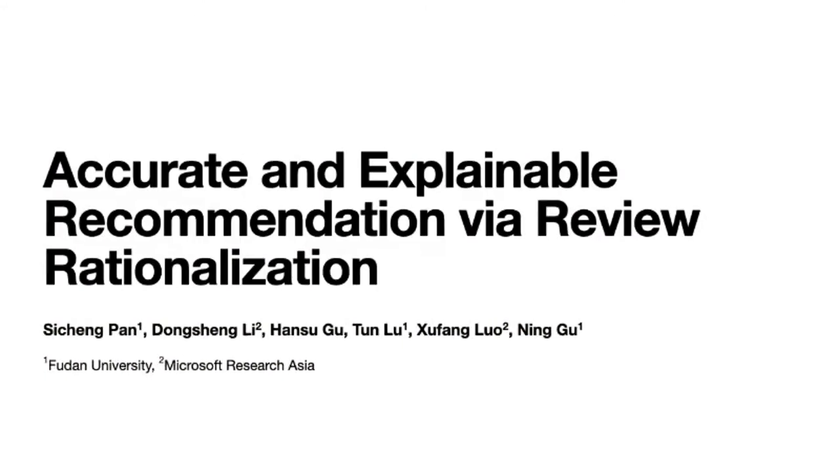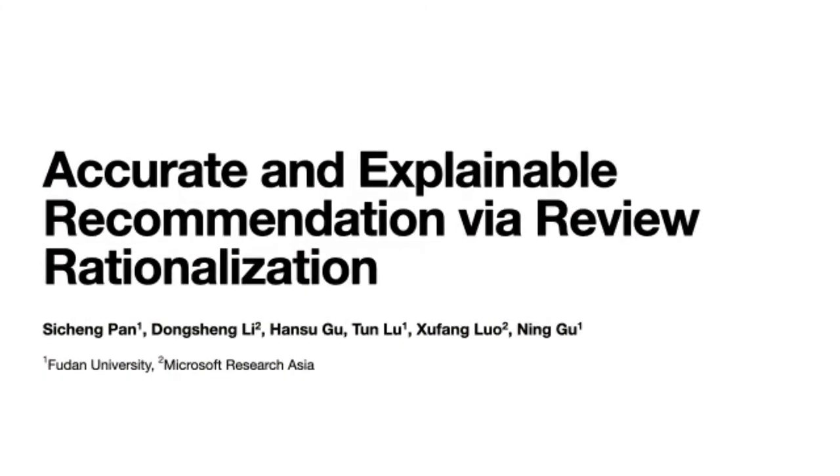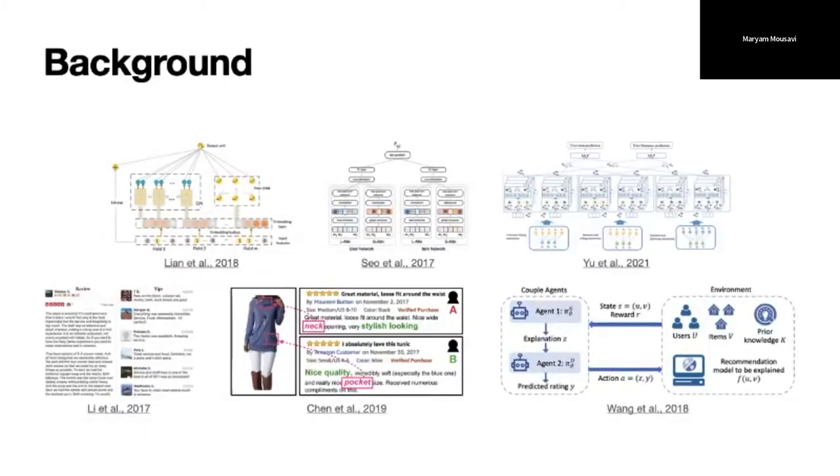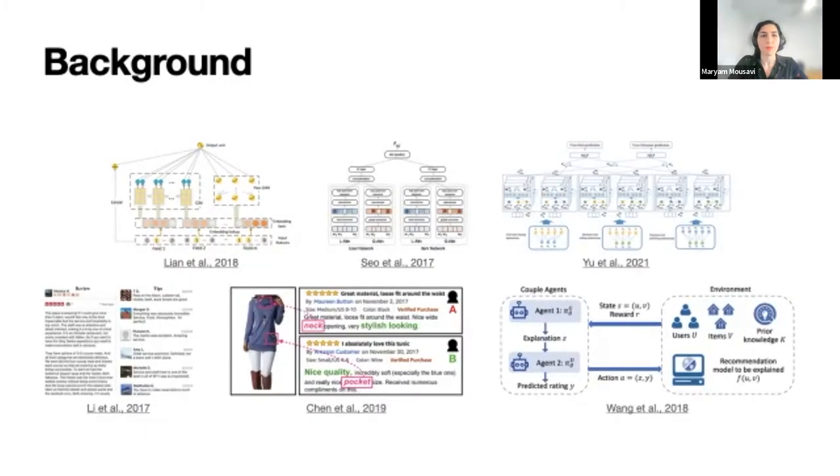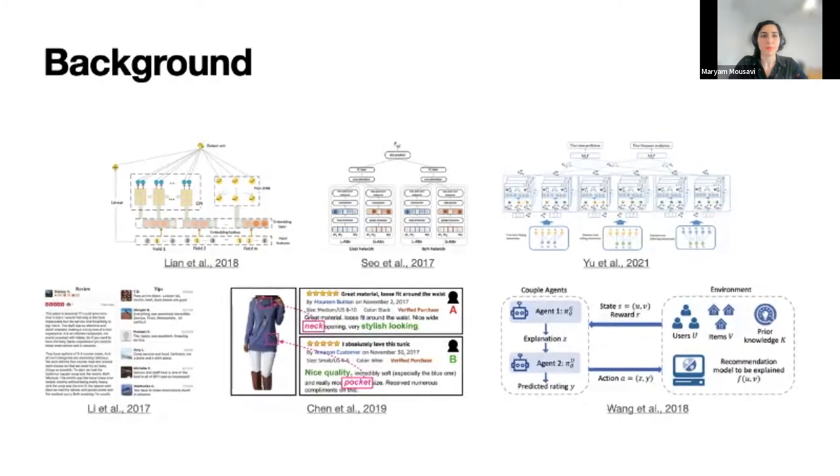Introduce our work about accurate and explainable recommendations via review rationalization. In recent years, researchers have been applying deep learning techniques to improve performance and explainability in recommender systems.